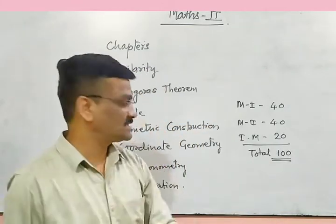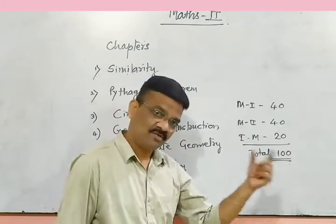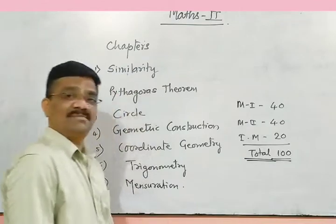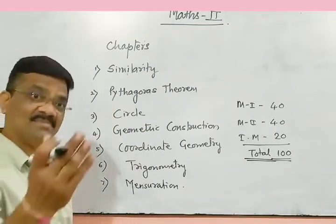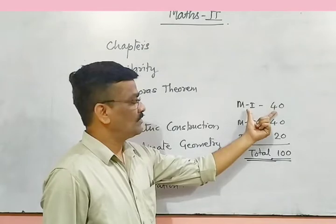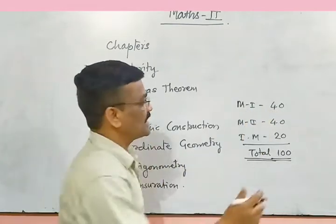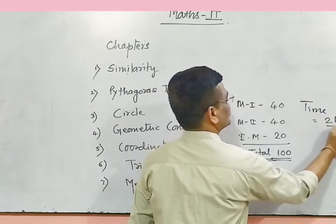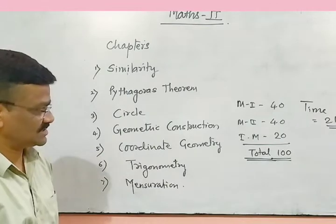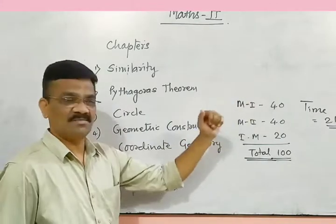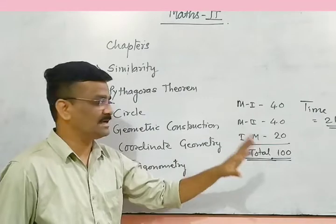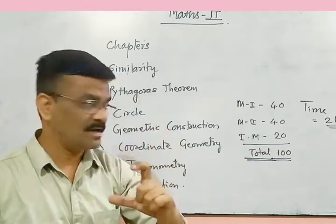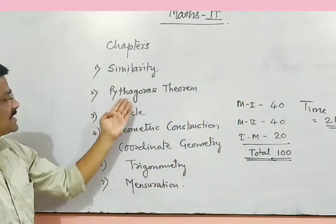In your result card, you will get marks out of 100. Students can score a maximum of 100 marks. For Maths 1 and Maths 2, the exam time allotted will be 2 hours each. So in the exam you get 2 hours — Maths 1 is 40 marks, Maths 2 is 40 marks, internal marks 20, total 100 marks. Maths 2 is 40 marks, 2 hours, 7 chapters in total.